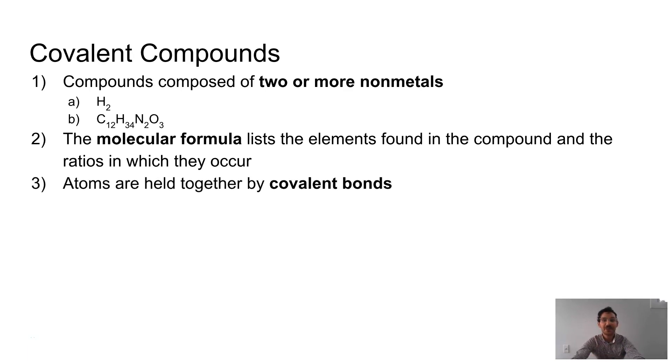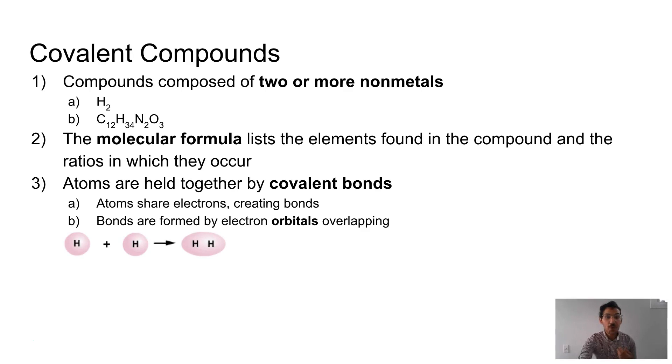So we know these atoms are held together by things called covalent bonds, and hopefully we recall that covalent bonds are when atoms share their electrons, creating bonds. These bonds are formed when electron orbitals, which we discussed in a previous video, overlap. So here's an image of two S orbitals. If you recall looking at those S orbitals, they look like spheres. When these dudes come together, they overlap, and that gives us a hydrogen molecule.